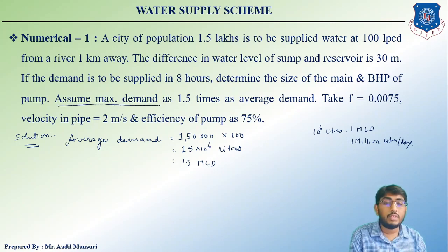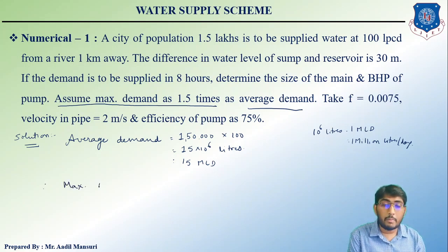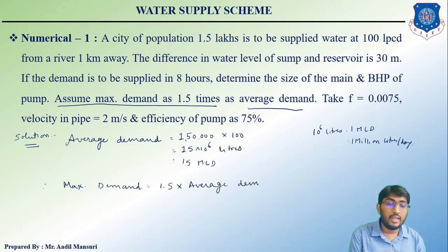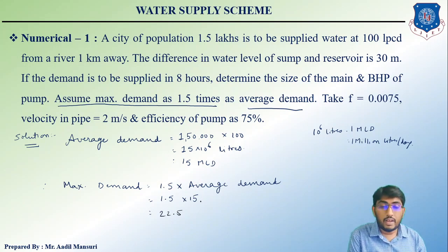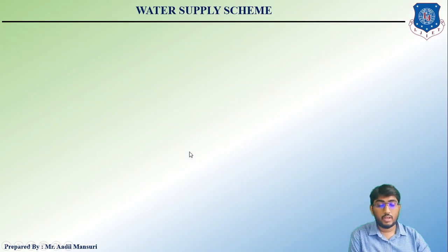We are told to assume maximum demand as 1.5 times the average demand. Therefore, maximum demand = 1.5 × 15 = 22.5 MLD.